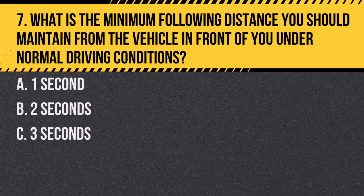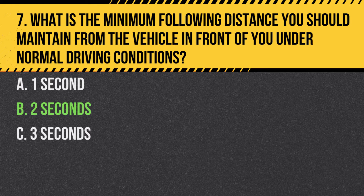Question 7. What is the minimum following distance you should maintain from the vehicle in front of you under normal driving conditions? a. 1 second. b. 2 seconds. c. 3 seconds. Answer: b. 2 seconds. A minimum of a 2-second following distance allows for a safe stopping distance under normal conditions.